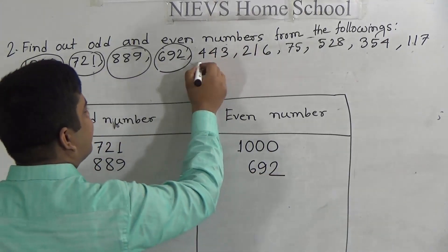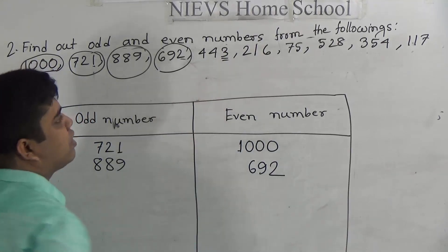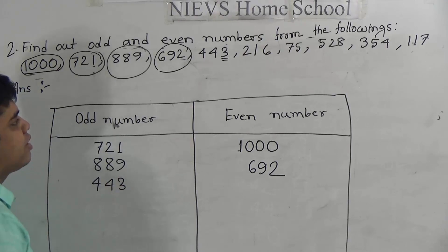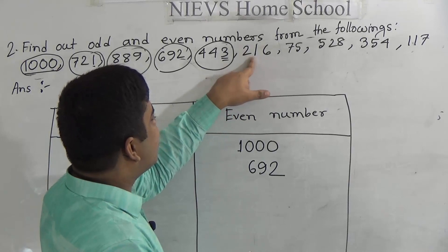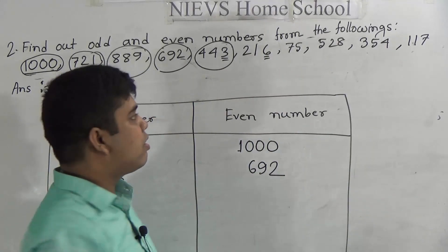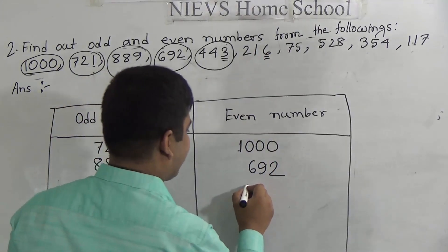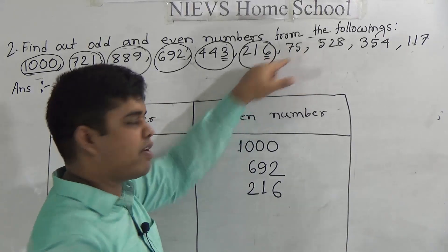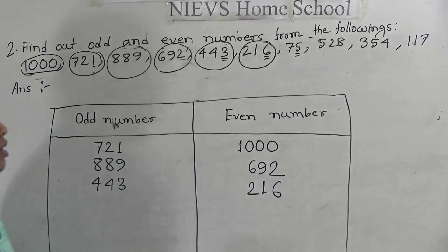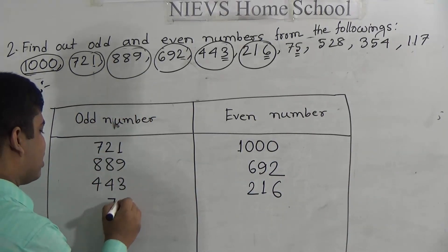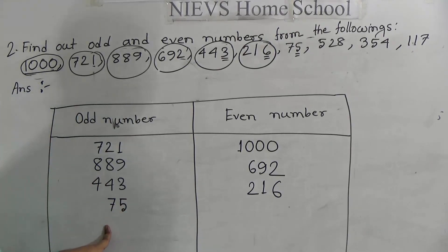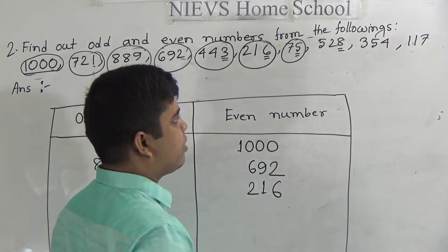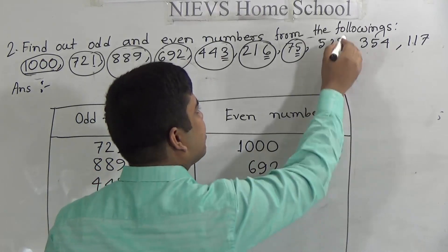443 — last digit is 3, which is odd, so 443 is an odd number. Write 443 in the odd box. 216 — last digit is 6, which is even, so 216 is an even number. Write 216 in the even number box. 75 — last digit is 5, which is odd, so 75 is an odd number. Write 75 in the odd number box. 528 — last digit is 8, which is even, so 528 is even.